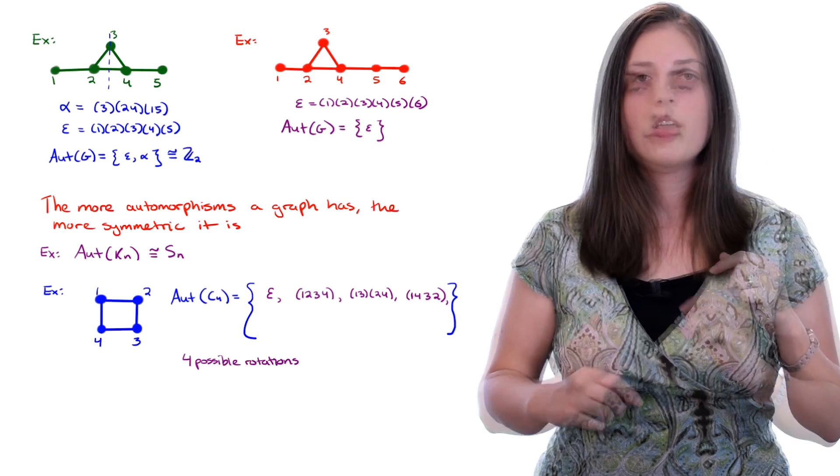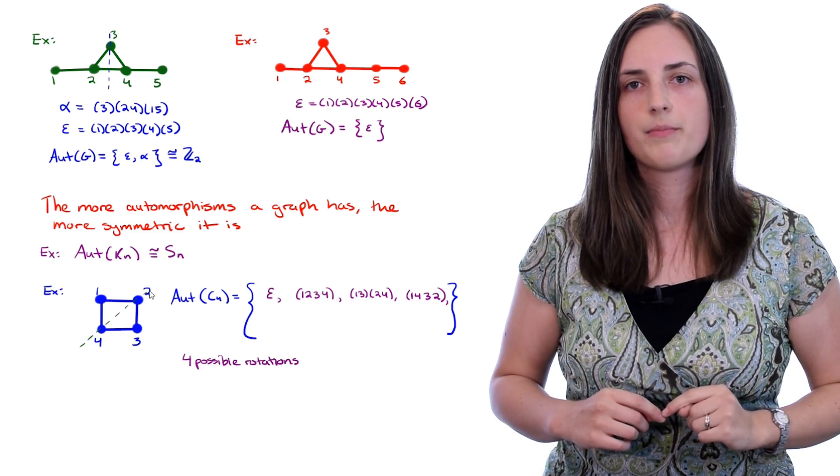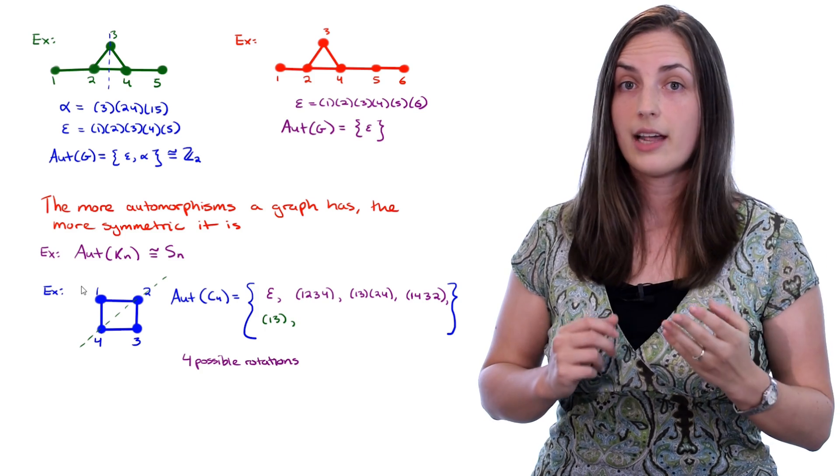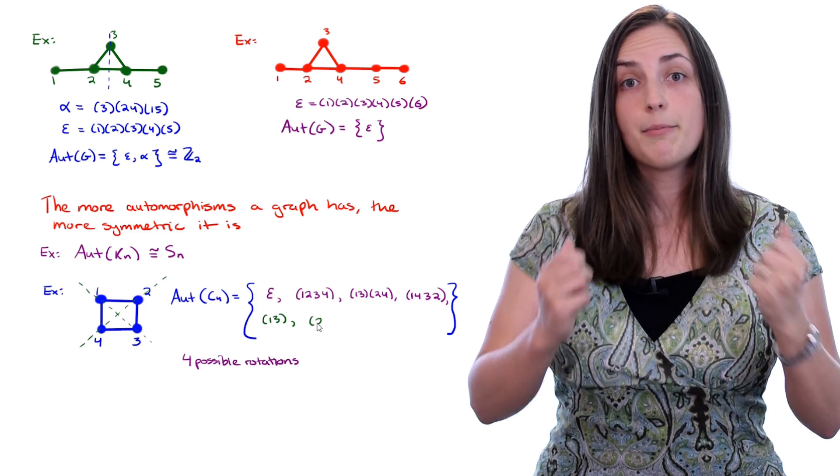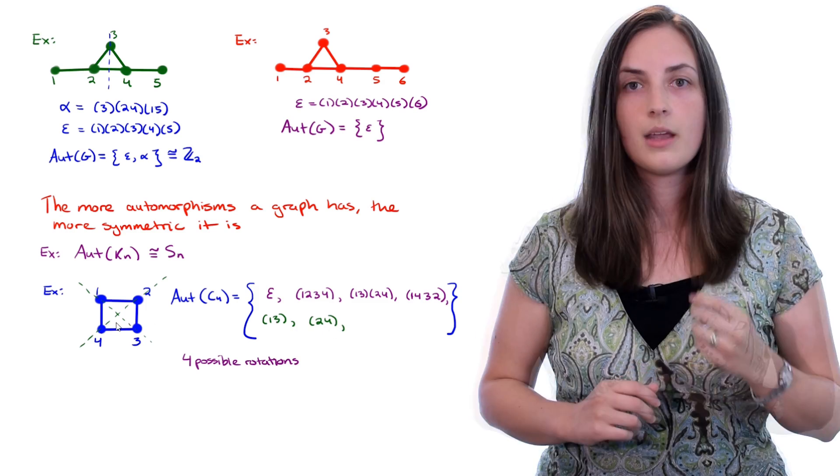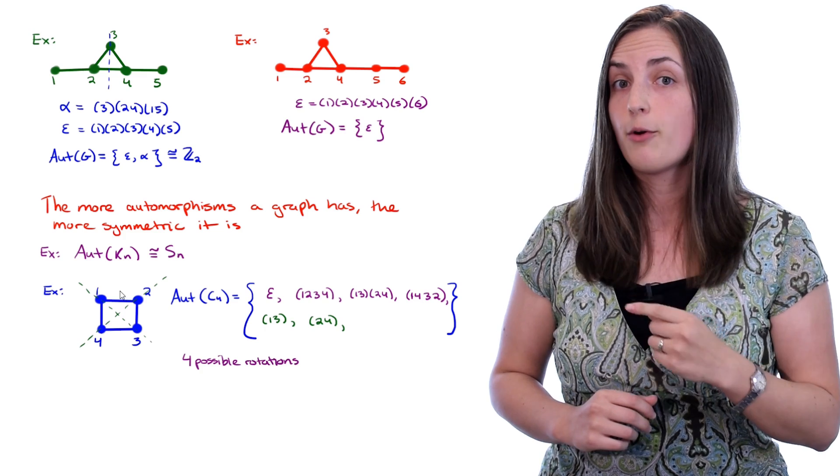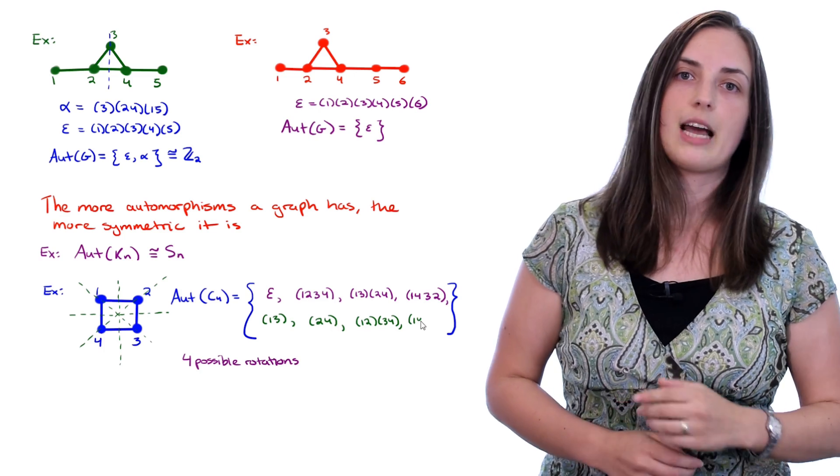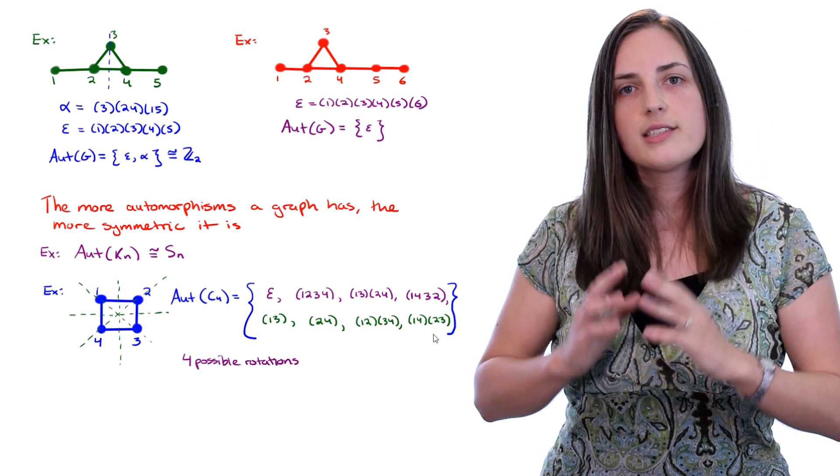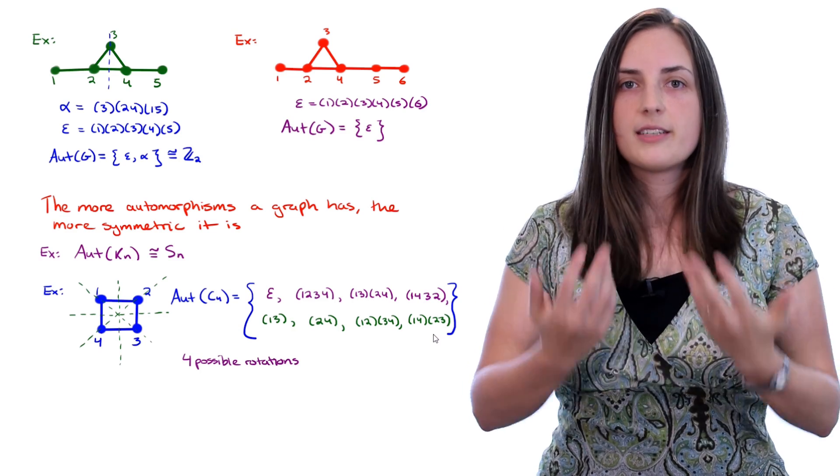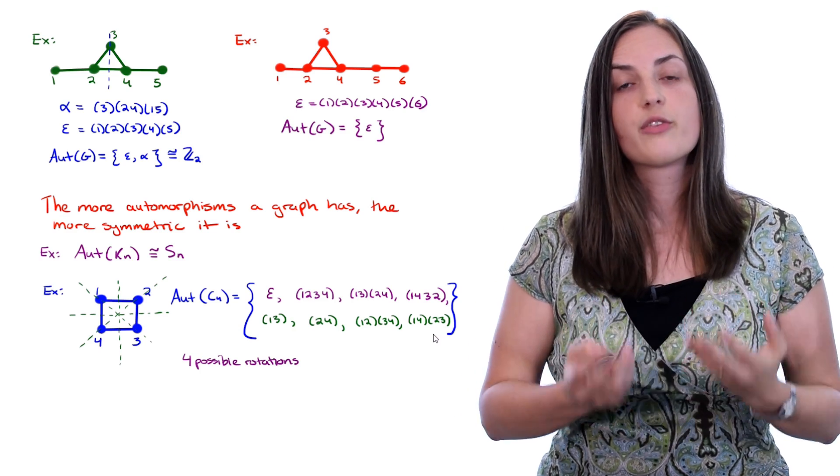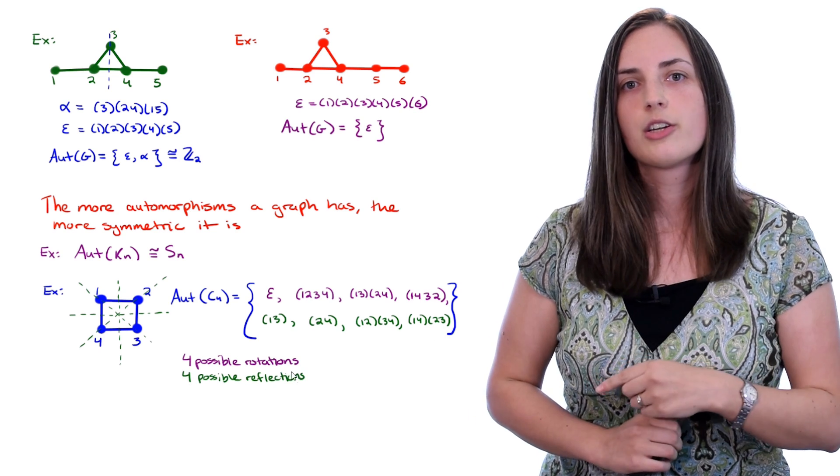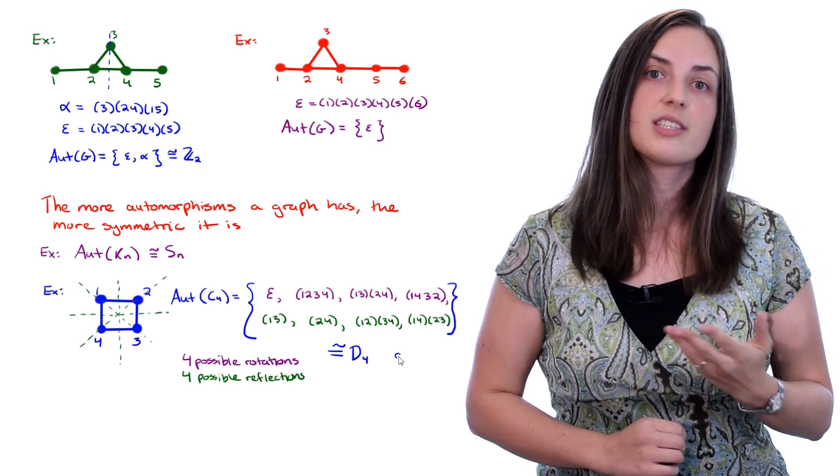Now let's look at possible reflections. We could reflect over this diagonal line, and that would map 1 and 3 to each other, but it would fix 2 and 4. Similarly, we could reflect over this other diagonal, and that would do the other thing. It would map 2 and 4 to each other, but it would fix 1 and 3. Now there are two more flips that we could do. We could flip over the vertical line, which looks like this permutation, or we could flip over the horizontal line, which looks like that permutation. And that's all we can do. So this set of eight automorphisms, together under composition, forms the group, the automorphism group, of the cycle on four vertices. Notice that it had four rotations, and then four reflections. In fact, this particular group is isomorphic to the group D4, which is a dihedral group.